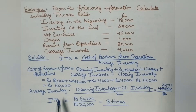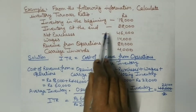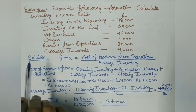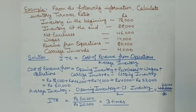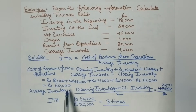Now we calculate average inventory. The formula is: opening inventory plus closing inventory divided by 2. Opening inventory is ₹18,000 and closing inventory is ₹22,000, giving us average inventory of ₹20,000. Therefore, inventory turnover ratio = ₹60,000 ÷ ₹20,000 = 3 times.